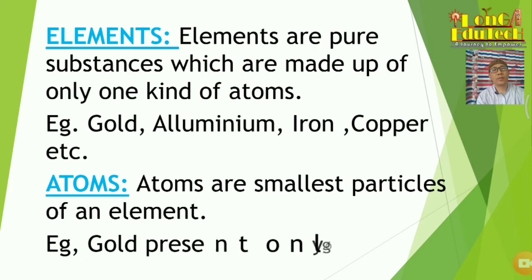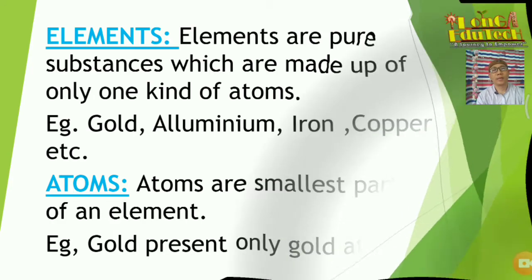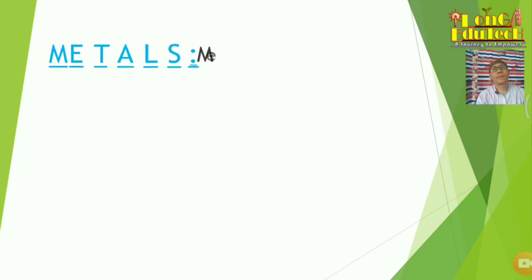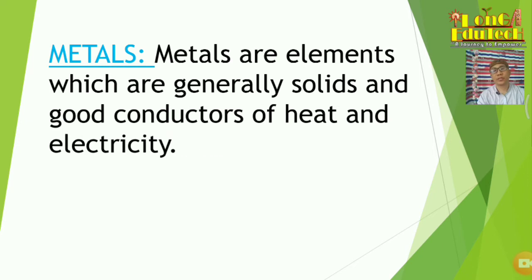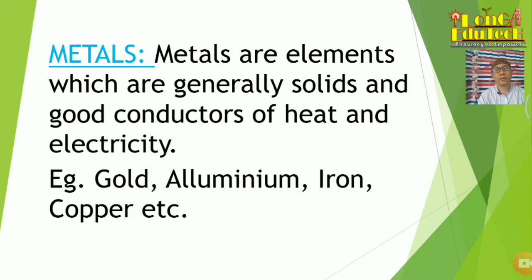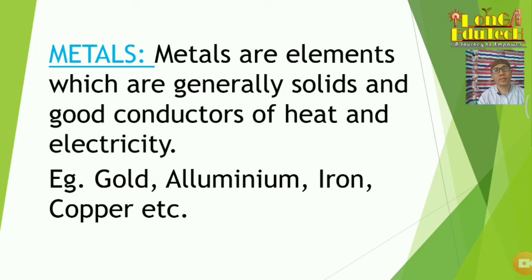For example, gold is made up of only gold atoms. Now, metals are elements which are generally solid and good conductors of heat and electricity. Examples include gold, aluminum, iron, and copper. Copper is used in electrical appliances, aluminum is used for kitchen utensils, gold is used for jewelry items, and iron is considered the backbone of modern civilization.